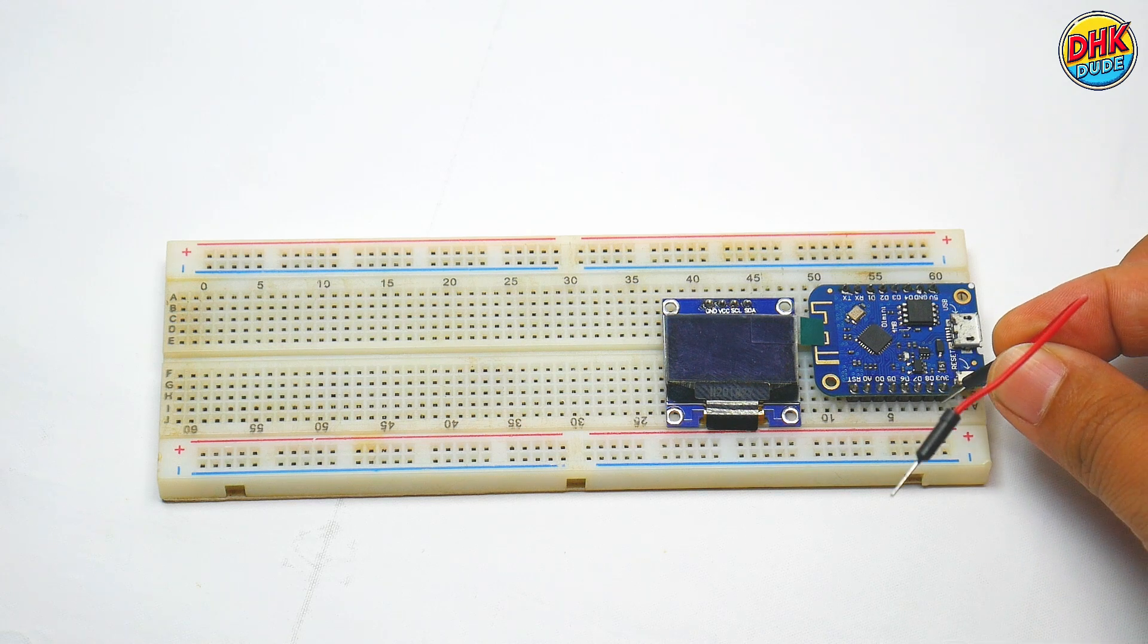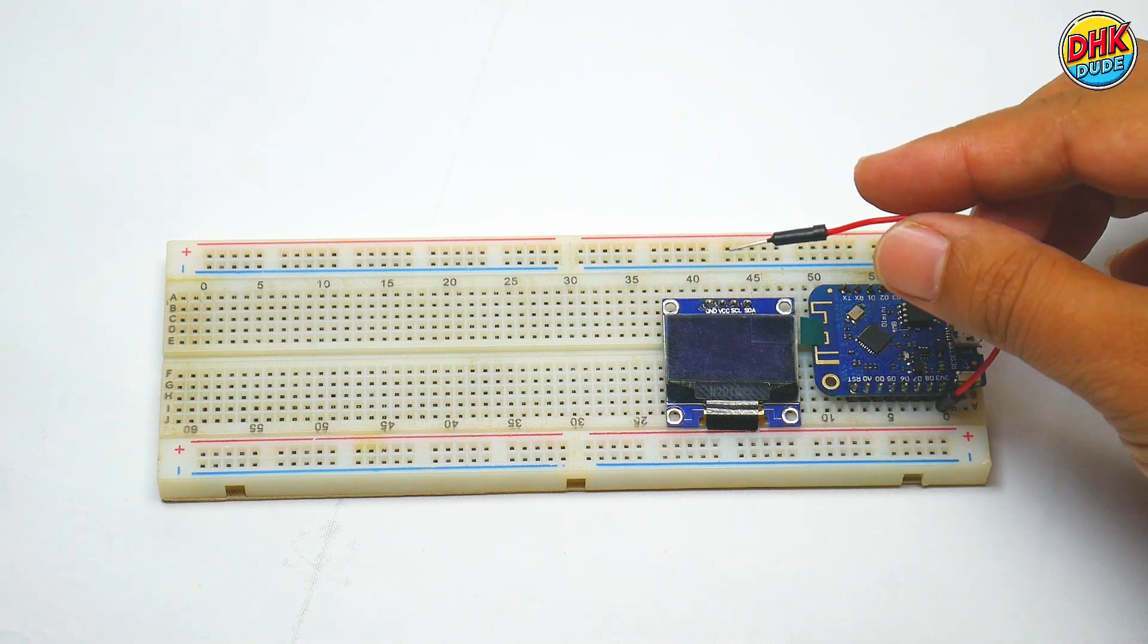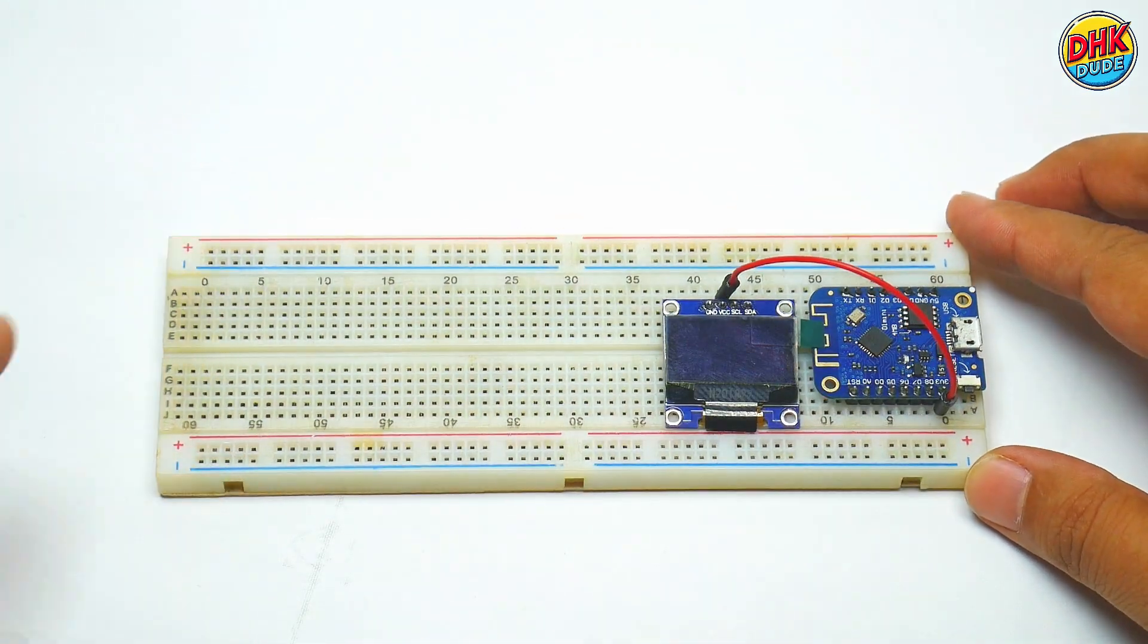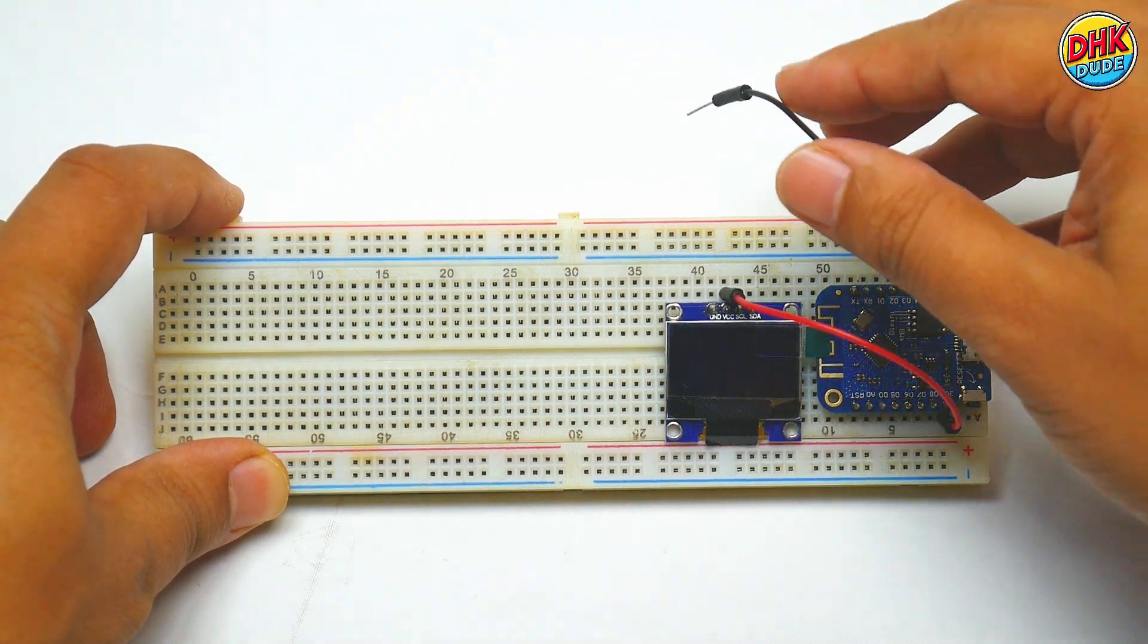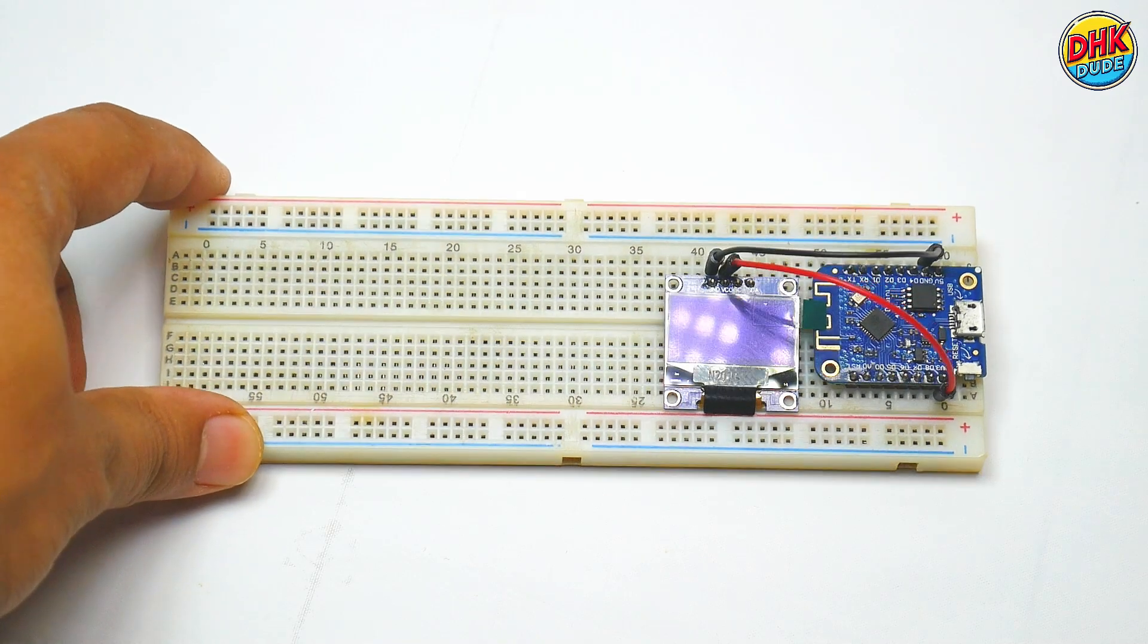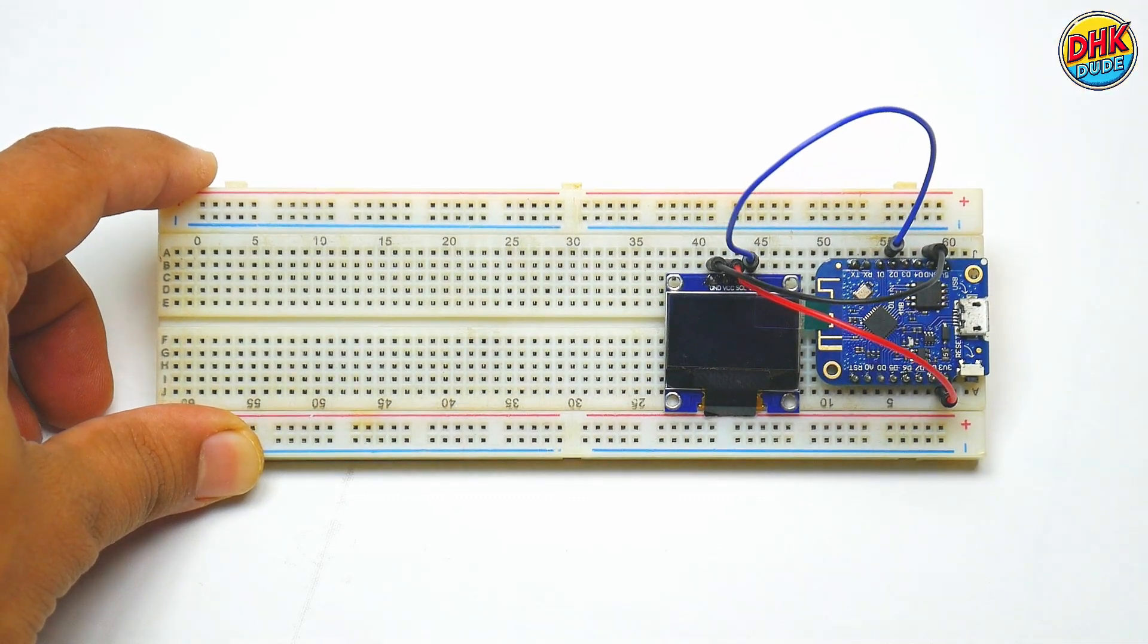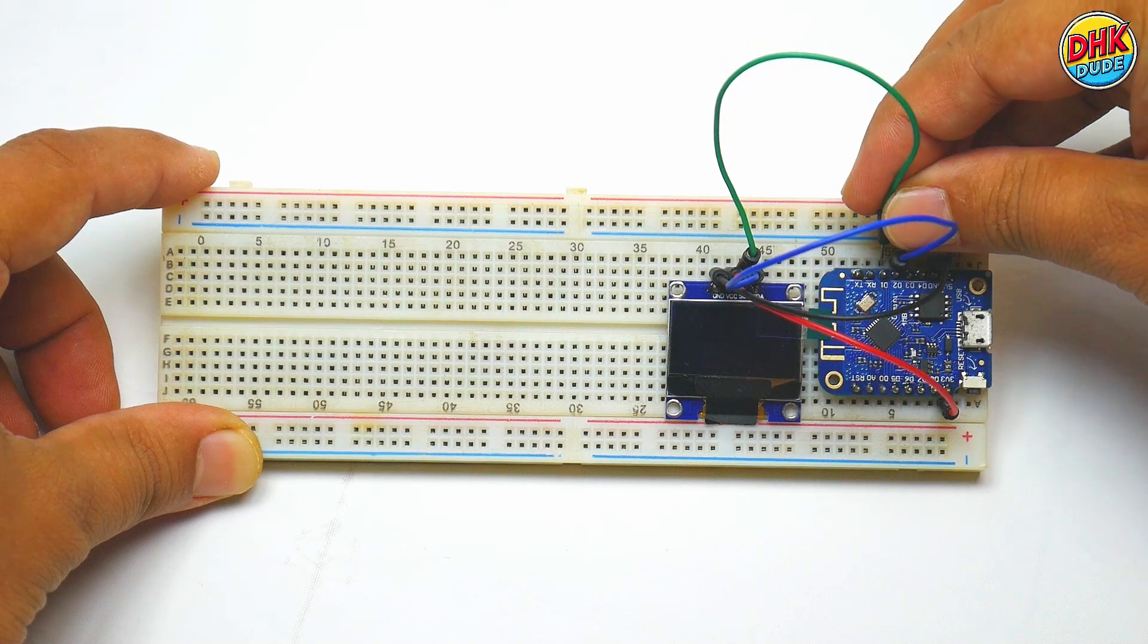Now take red jumper wire and connect 3.3V pin of the microcontroller to VCC pin of the OLED screen. Now take black jumper wire and connect GND pin of the controller to GND pin of the OLED screen. Now take blue jumper wire and connect SDA pin of the OLED screen to D2 pin of the microcontroller. Now take green jumper wire and connect SCL pin of the OLED screen to D1 pin of the microcontroller.